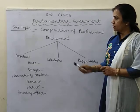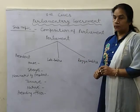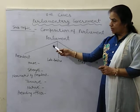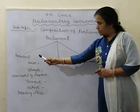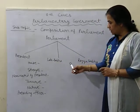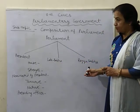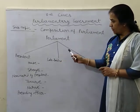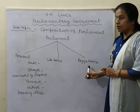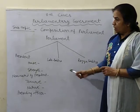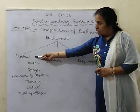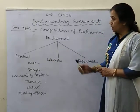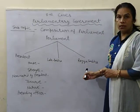Today we will talk about the composition of Parliament. Parliament has three components — three organs — that are: first is President, second is Lok Sabha, and third is Rajya Sabha. Today we will talk only about the two houses of the Parliament, Lok Sabha and Rajya Sabha. For the part of the President, we will take that in another video.